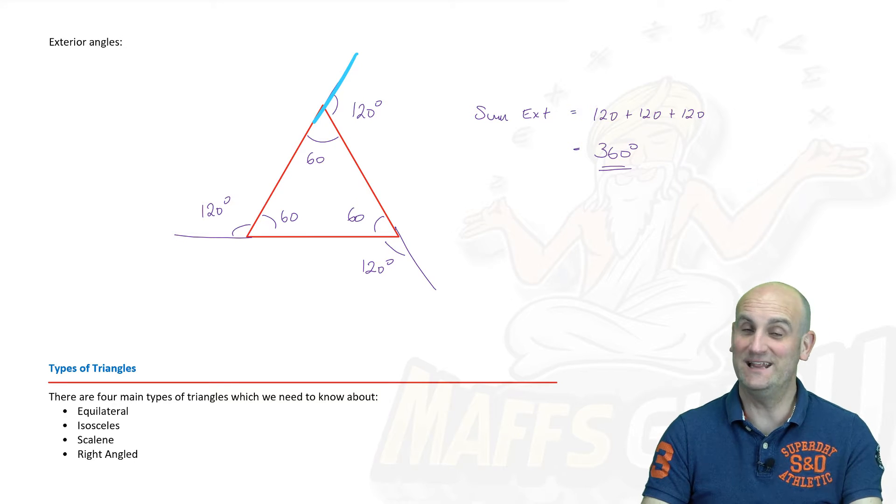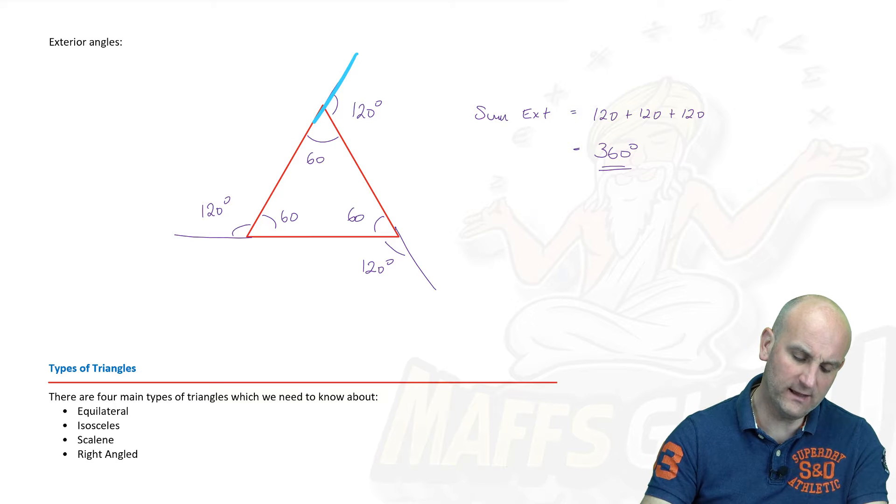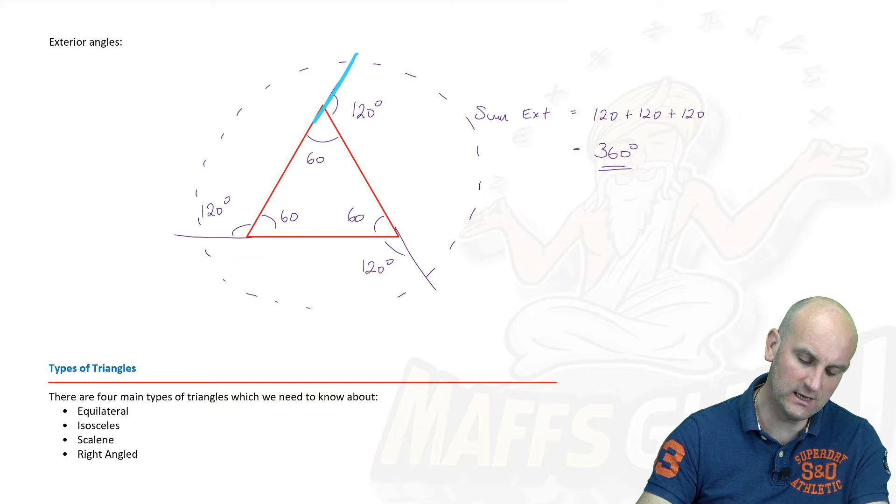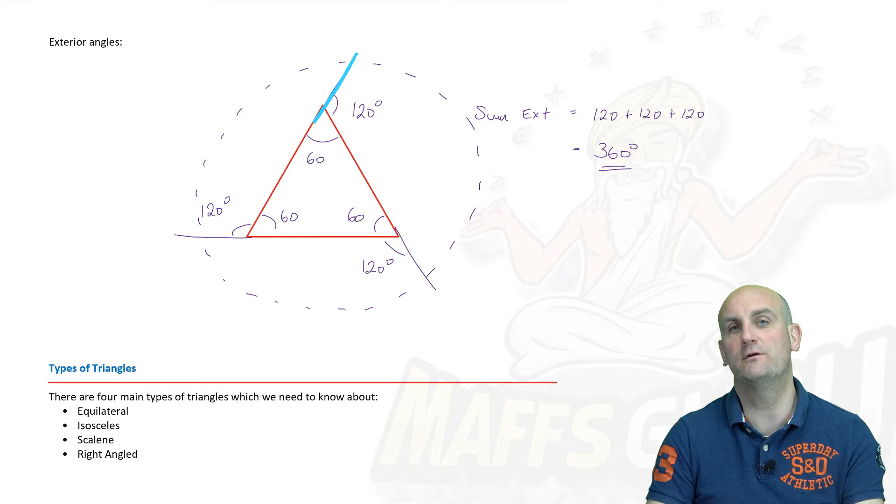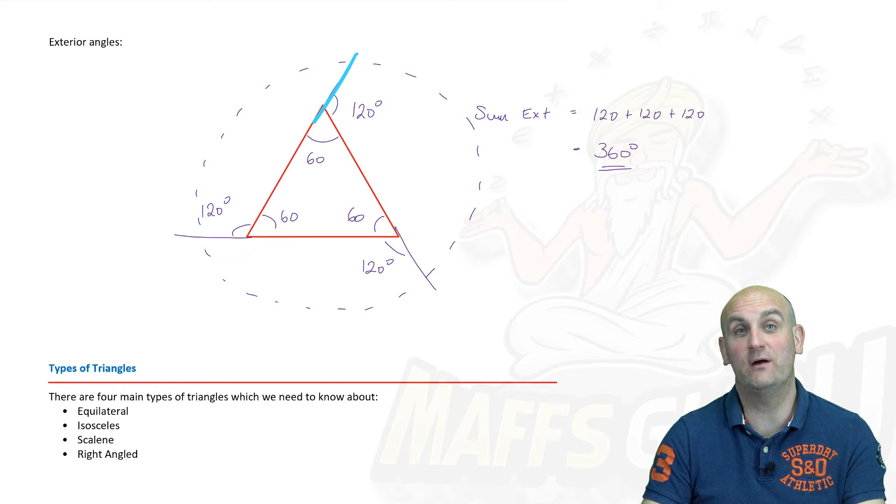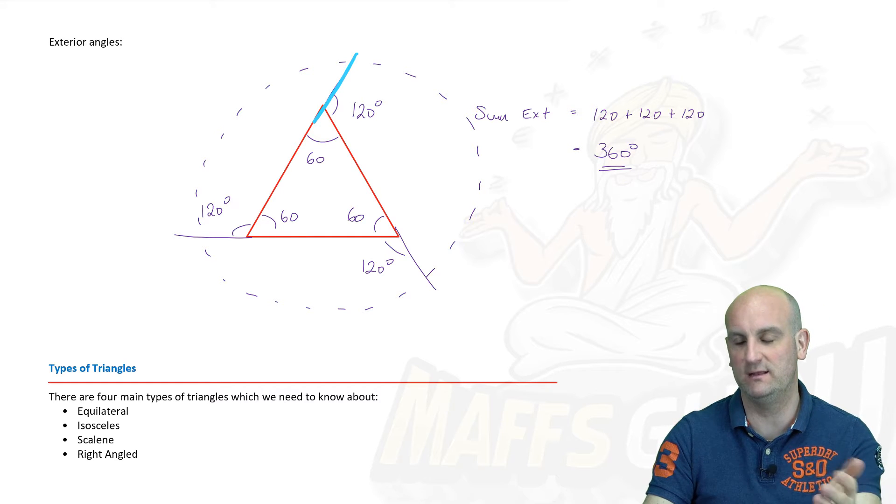Whoa! Now, actually, that sort of makes sense, because what I want you to think about is, if I was actually to walk around the exterior of this shape, but to follow a circle, how many degrees will I have turned? 360. And actually, as it turns out, the exterior angles of all polygons, of all shapes like we're going to be dealing with today, are 360 degrees.